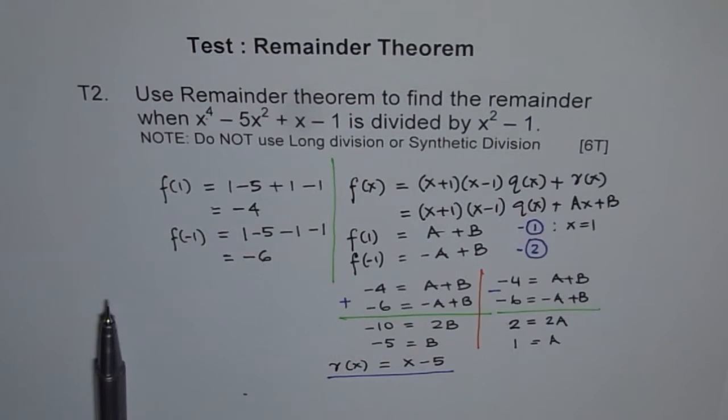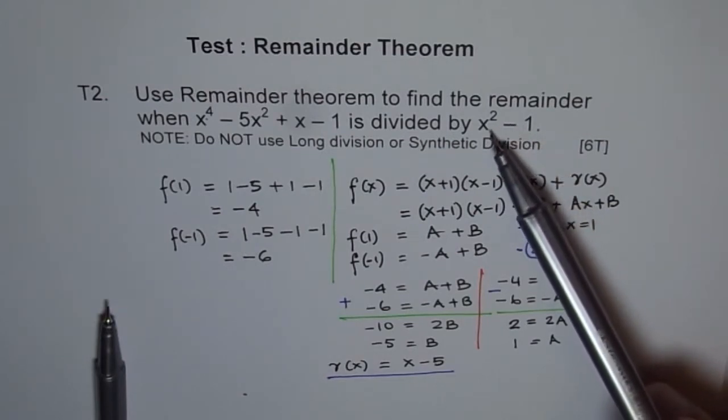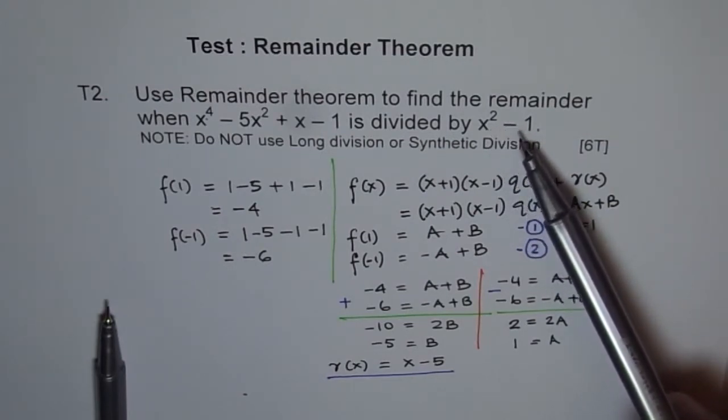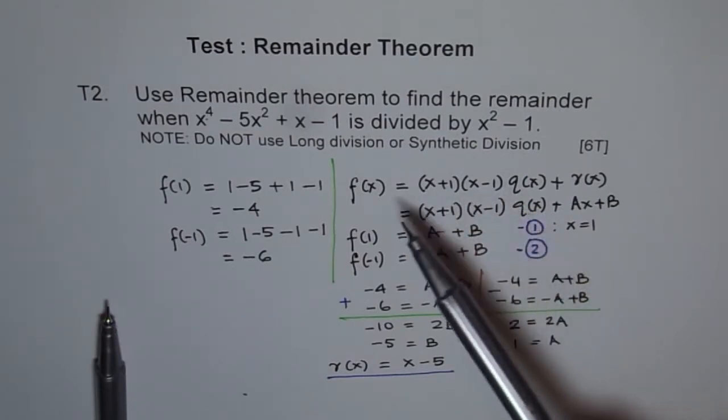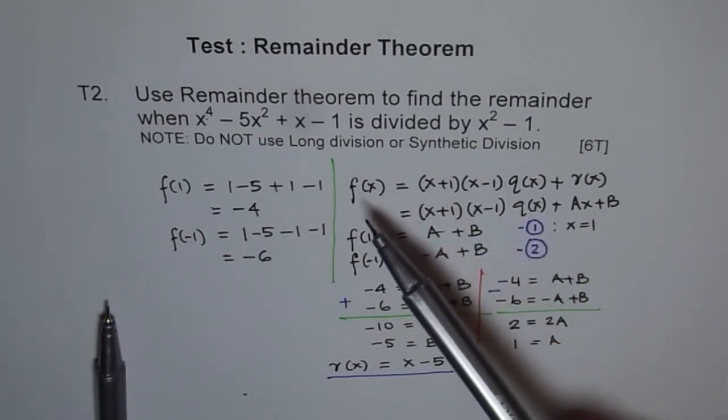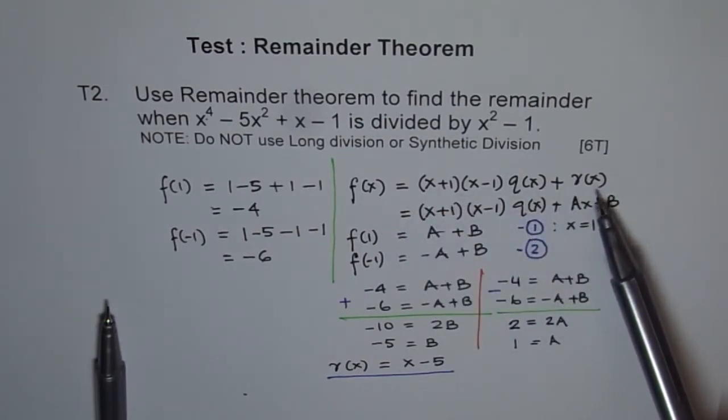Try to understand the whole process. First, we are dividing by a quadratic divisor. We factor that out, x plus 1 times x minus 1. And then we write our division statement. So f of x equals divisor times quotient plus remainder.